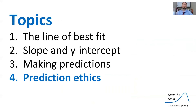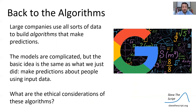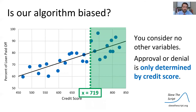Finally, let's turn to the topic we started with: prediction ethics. Large companies use all sorts of data to build algorithms that make predictions. These models are definitely more complicated than the ones we just discussed, but the basic idea is the same — making predictions about people using input data. One major question is asking if the algorithm is biased.